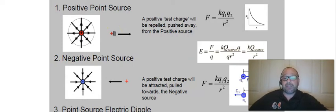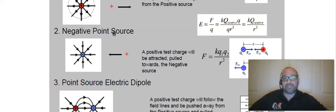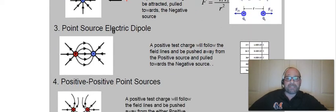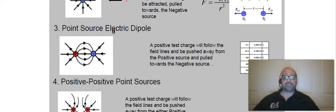In the case of a positive source, the positive test charge is repelled or pushed away. The law of charges states very simply that opposites attract and similar repel. Now, negative point source: when we bring a positive near negative, we have something called an electric dipole.